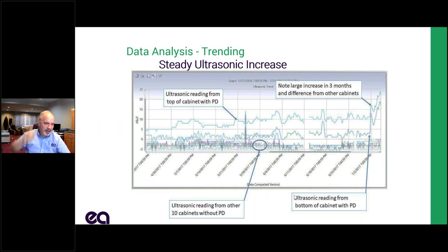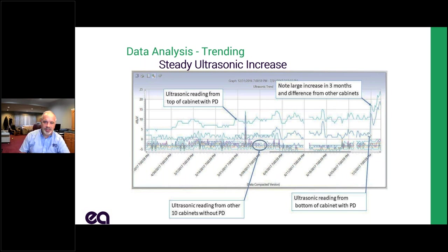Here's another example from a customer who energized brand new gear in March 2017. There are about 14 different ultrasonic sensors on this system. You can see one trace along the top that just keeps getting higher and higher, ramping up slowly. At the end of this period, the customer decided to take it out of service and found the PD. The second line following it and also going up was the second ultrasonic sensor in the same cabinet. The discharge was very close to the top of the cabinet, so the top sensor showed a higher reading than the bottom sensor.